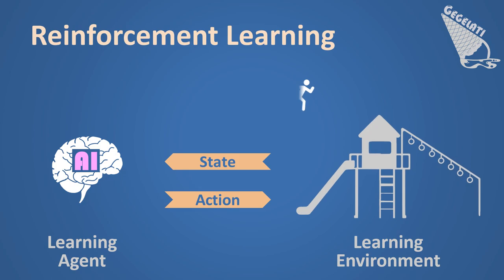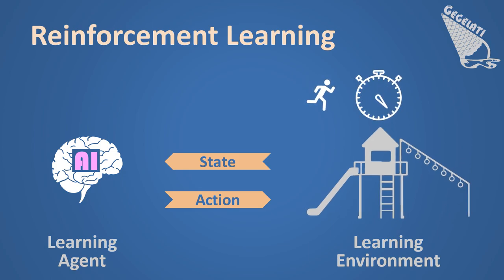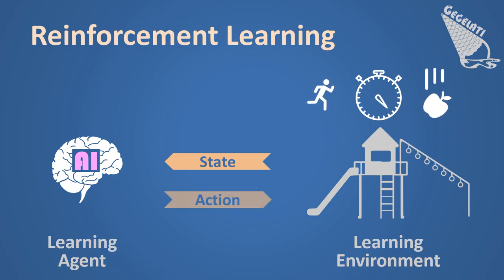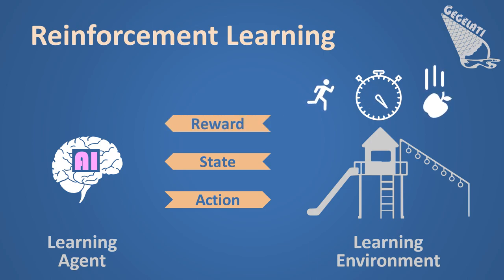As a result of these actions, or because of external phenomena such as time or physics, the state of the learning environment may change. By observing the constantly evolving state of the environment, the learning agent has the possibility to react and to build a meaningful sequence of actions. For the learning agent to learn which sequences of actions are useful and which are not, an additional reward mechanism is needed between the learning environment and the agent. This reward mechanism will tell the learning agent whether its actions were good or bad, helping it to select the most rewarding behavior.